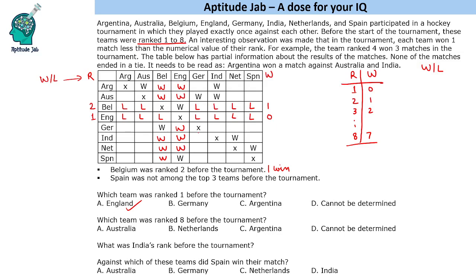Now we have just one information left: Spain was not among the top 3 teams before the tournament. So Spain's rank is 4, 5, 6, 7, or 8 — the numerical value is greater than 3.